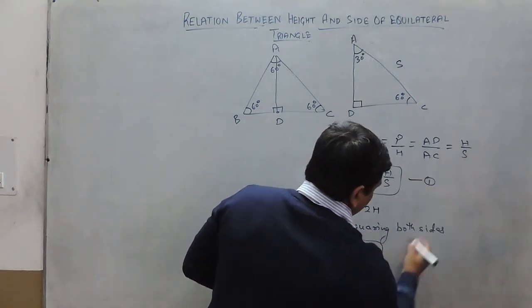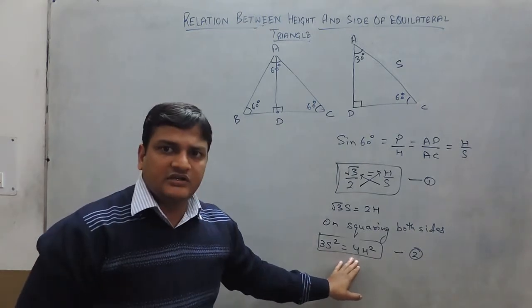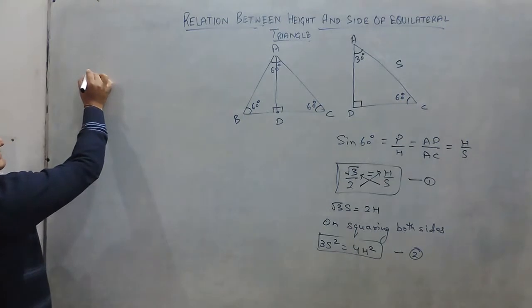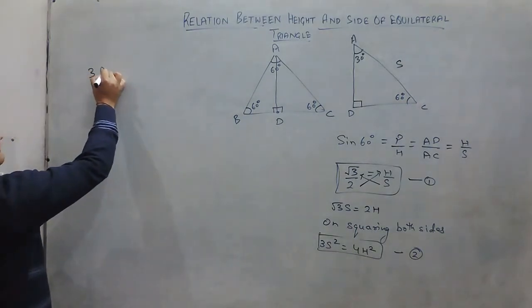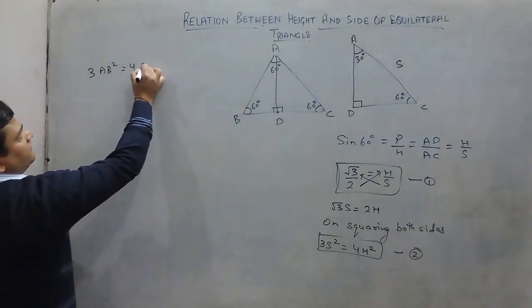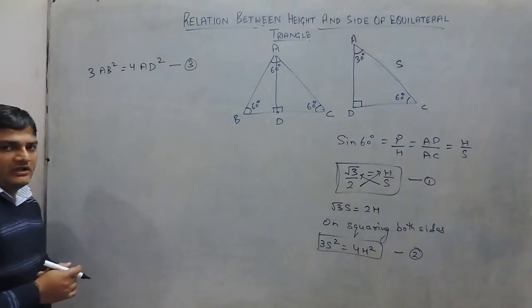This is relation 1, this is 2. If we take this relation in the form of sides, we can write it as 3 times AB square equals to 4 times AD square. This is relation 3.